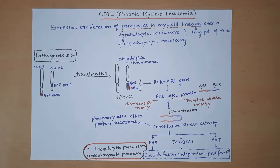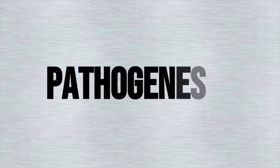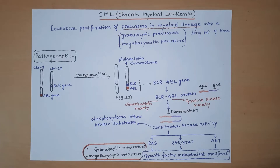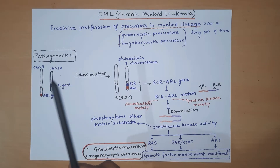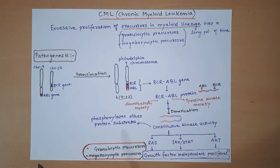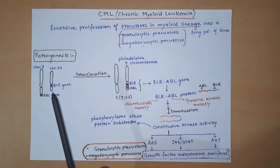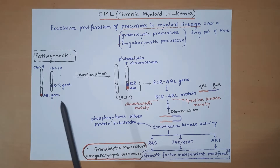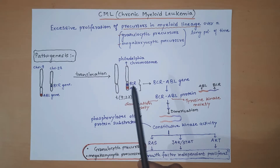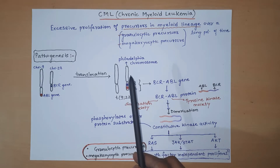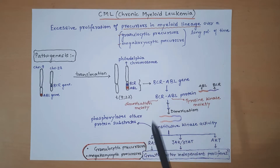Coming to the pathogenesis of CML: what happens in patients of CML is there is a translocation between chromosome number 9 and chromosome number 22. There is the ABL gene located on chromosome 9 and the BCR gene located on chromosome 22. After translocation, chromosome 22 acquires both genes — BCR and ABL — and this newly formed chromosome 22 is known as the Philadelphia chromosome.